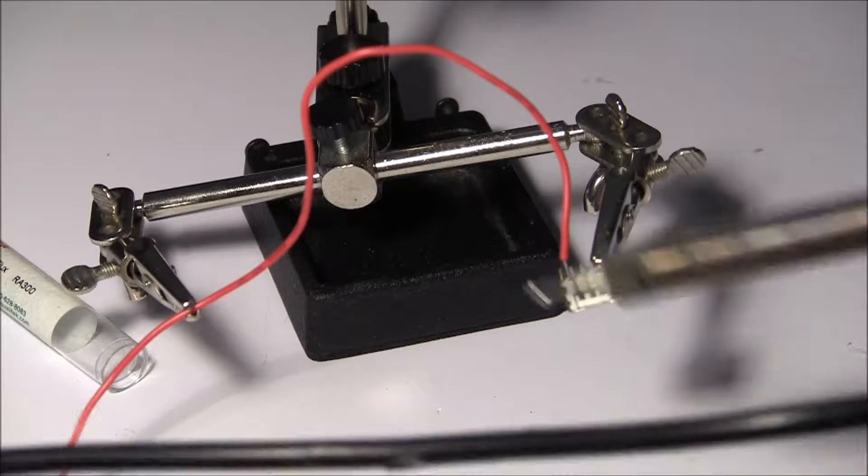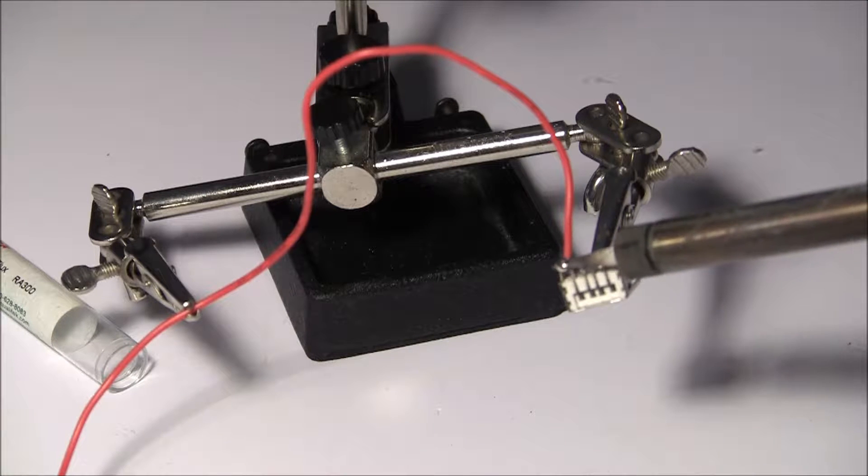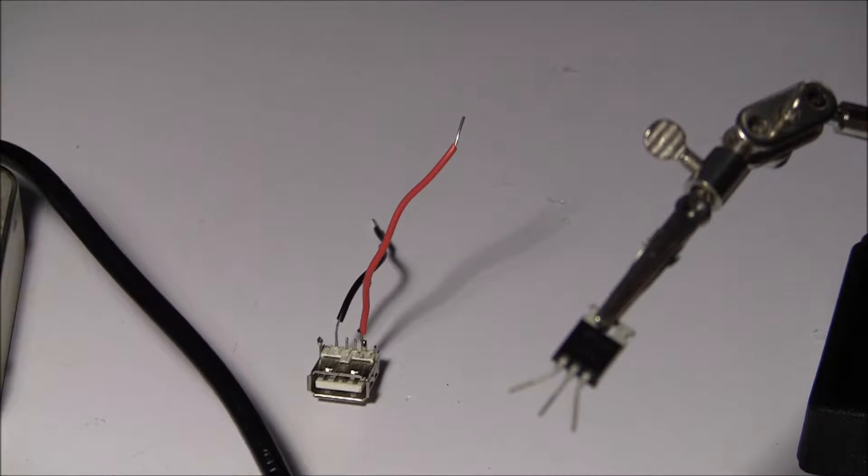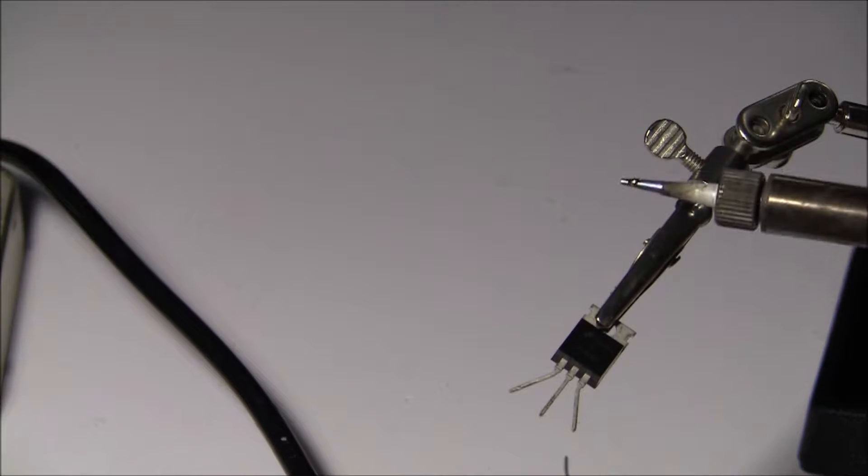Start by soldering two wires on the left and right connections on the USB. Solder the right wire to the right connection on the regulator and solder the black one to the middle.